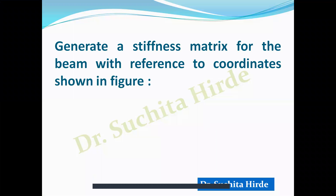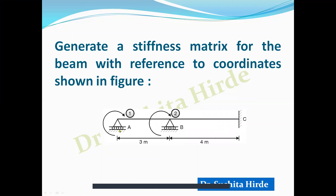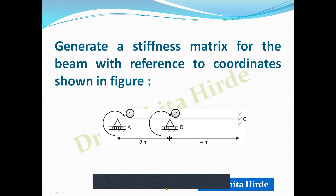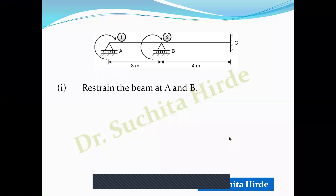Let us generate the stiffness matrix for a beam with reference to the coordinates shown in the figure. Consider this beam with two simple supports at A and B and a fixed support at C. Remember that the stiffness matrix depends only on the support conditions, not on the loads on the beam. Here, there are two unknowns — theta A and theta B — giving two coordinates: coordinate 1 at A and coordinate 2 at B.